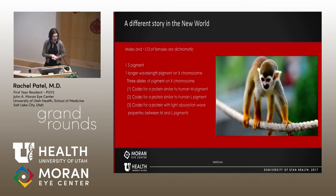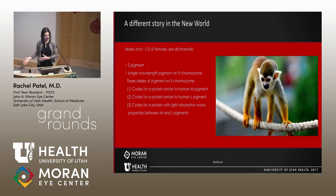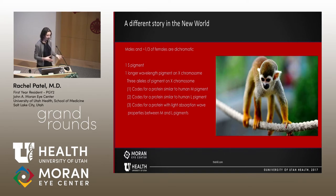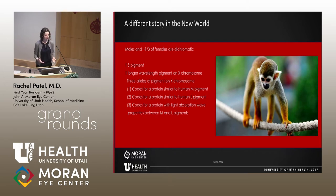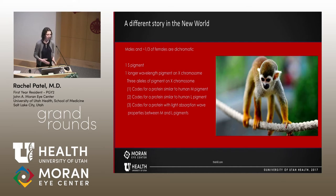In the new world, it's a little different. All males and about a third of females are dichromatic; the remainder of females are trichromatic. They have one S-pigment gene, and then just one longer-wavelength pigment gene on the X chromosome. However, there are three alleles that can be located at this locus — one coding for a protein similar to the human M pigment, one similar to the human L pigment, and one in between.